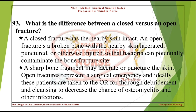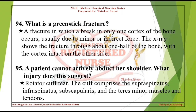A sharp bone fragment may lacerate or puncture the skin. Open fractures represent a surgical emergency — these patients are ideally taken to the OR for thorough debridement and cleansing to decrease the chance of osteomyelitis. What is a greenstick fracture? A fracture in which a break in only one cortex of the bone occurs, usually due to minor or indirect force; the X-ray shows the fracture through about one half of the bone, with the cortex intact on the other side.